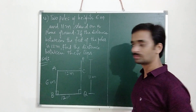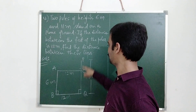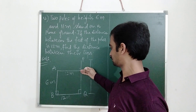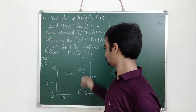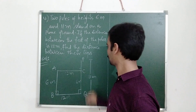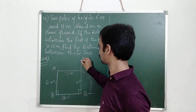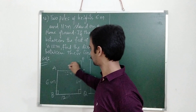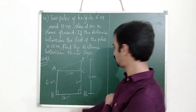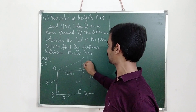If you observe, PC is equal to PQ minus CQ. CQ will also be 6m. So the distance we have to find — PC is equal to 11 minus 6, which is 5m.